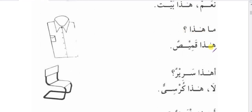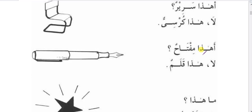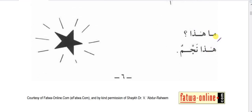Practice examples: maa haza — haza kamisun, this is a shirt. A haza sarirun — is this a bed? Laa, no — haza kurthiyun, this is a chair. Maa haza — is this a key? Laa, no — haza qalamun, this is a pen. Maa haza — haza najmun, this is a star.